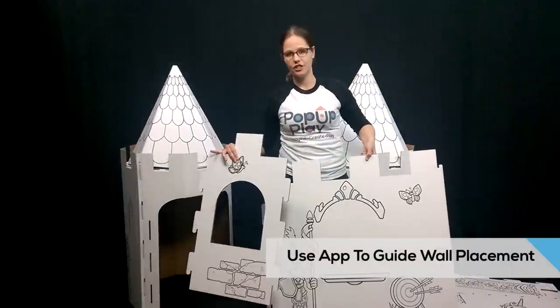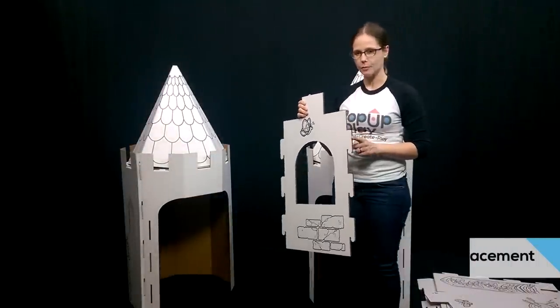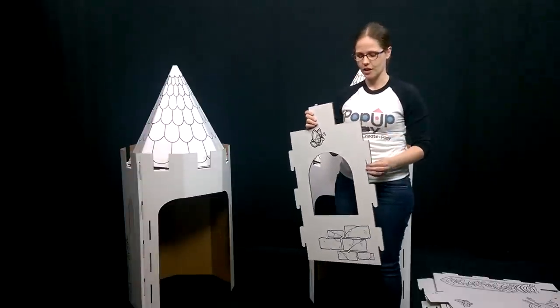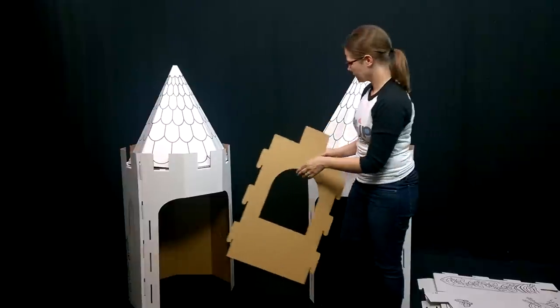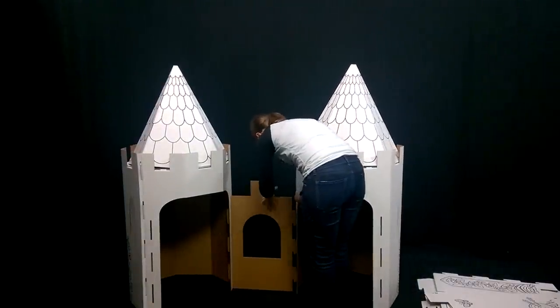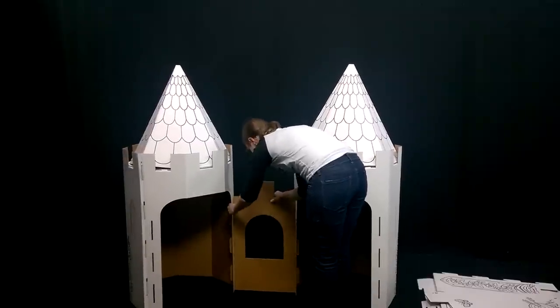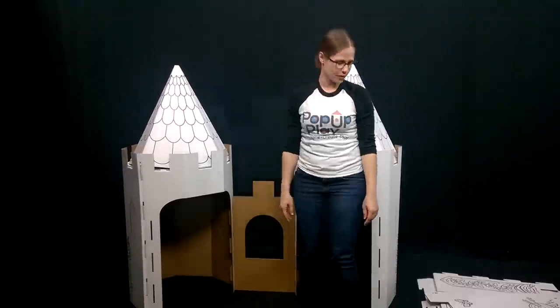Check in the app to see which walls go where. Each wall has tabs that fit into the slots, just like on the tower. Assemble the walls into the slots, making sure to push down firmly.